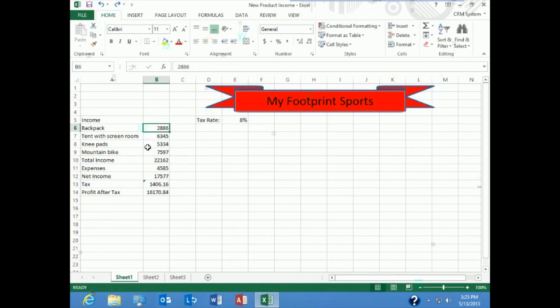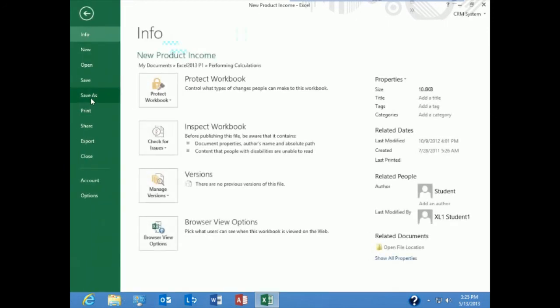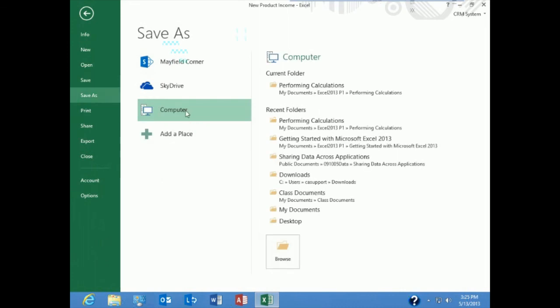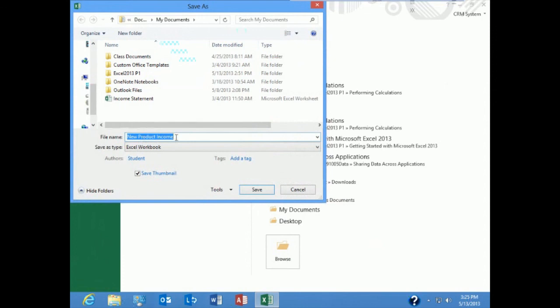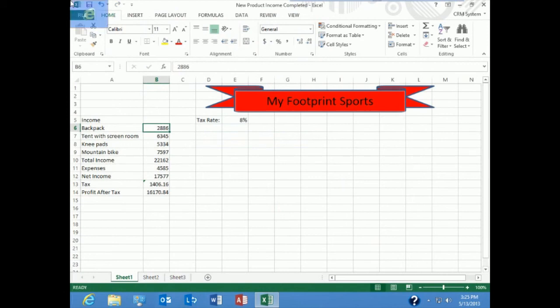And now I'm going to save this under a new name. So I go to file, save as, and I'll call it new product income completed. When I'm done, file close.